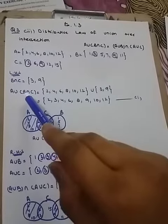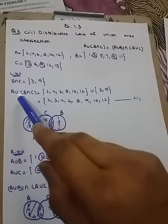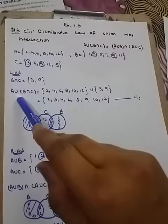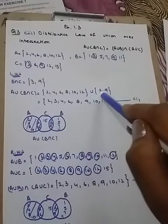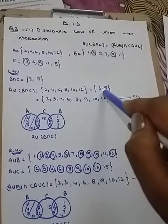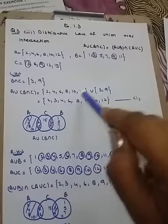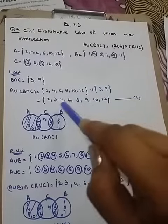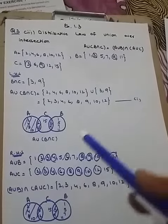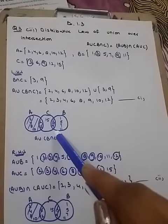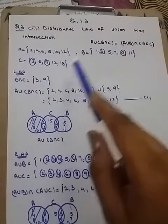Now B intersection C, and I'm going to take union with A. A set union answer of B intersection C. Union means to combine all the elements. Okay, Venn diagram is same because these three sets are same.